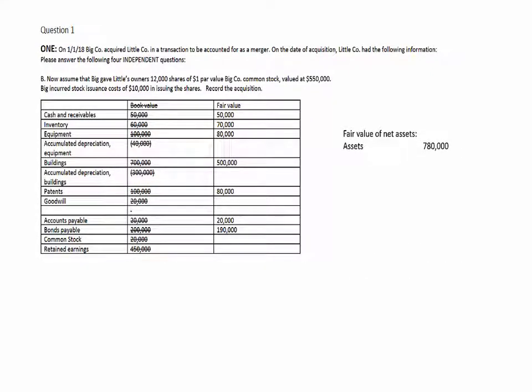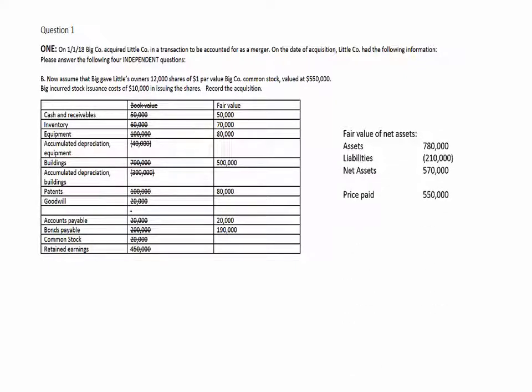The first thing we need to do is figure out the fair value of the net assets and whether there's goodwill or not. Net assets have a fair value of $780,000 for the assets, $210,000 for the liabilities — net assets $570,000. And now we're giving the previous owners shares of stock worth $550,000, so somehow we ended up buying this company for less than the fair value of its net assets, and we're going to have a $20,000 bargain purchase.